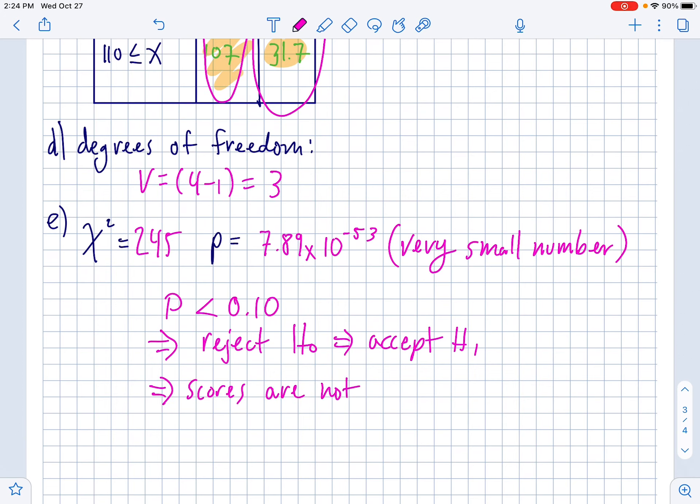Which if you go back up here, h1 said that the scores are not normally distributed. At least not with a mean equal to 100 and a standard deviation of 10. So yeah, all that to say, no, they're not actually normally distributed like they should be with a mean of 100 and a standard deviation of 10.